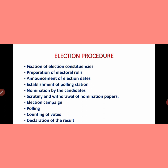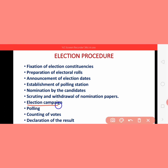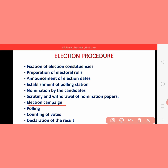Next step is election campaign. Election campaign means propagating or publicizing in support of a political party or candidate. The motive is to tell people about the party's aims and objectives. For this, public meetings are organized, rallies are held, and promotion is done through newspapers, pamphlets, radio, and television. Candidates tell people about themselves and try to get votes in their favor.